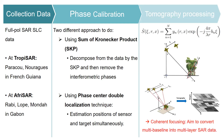Third, after phase calibration, in the tomographic processing step which allows us to convert multiple baselines into a multi-layer SAR data stack. The implementation is quite easy. It can be carried out by exploiting the Fourier transform relationship which links reflectivity and the multi-baseline signal.